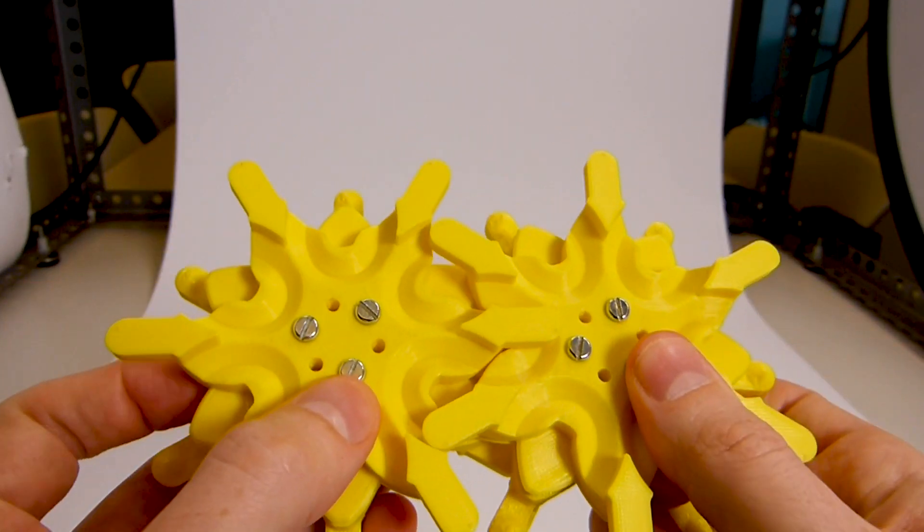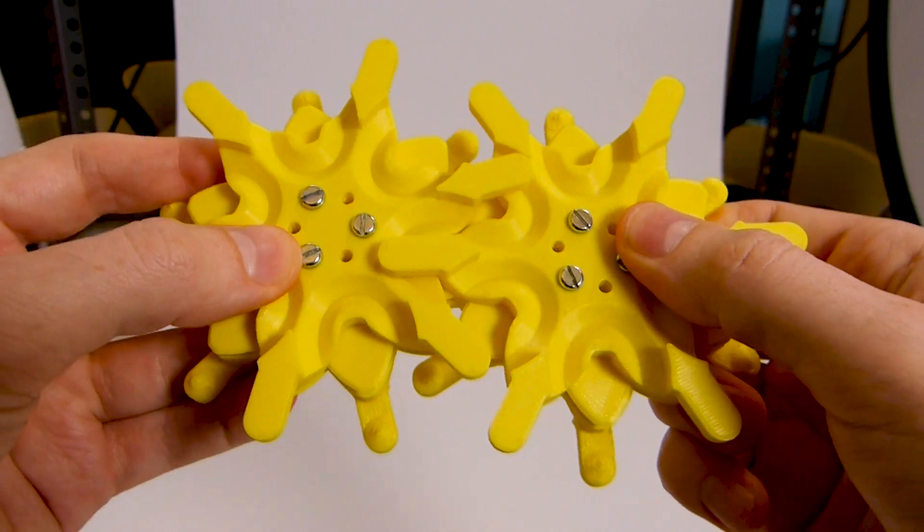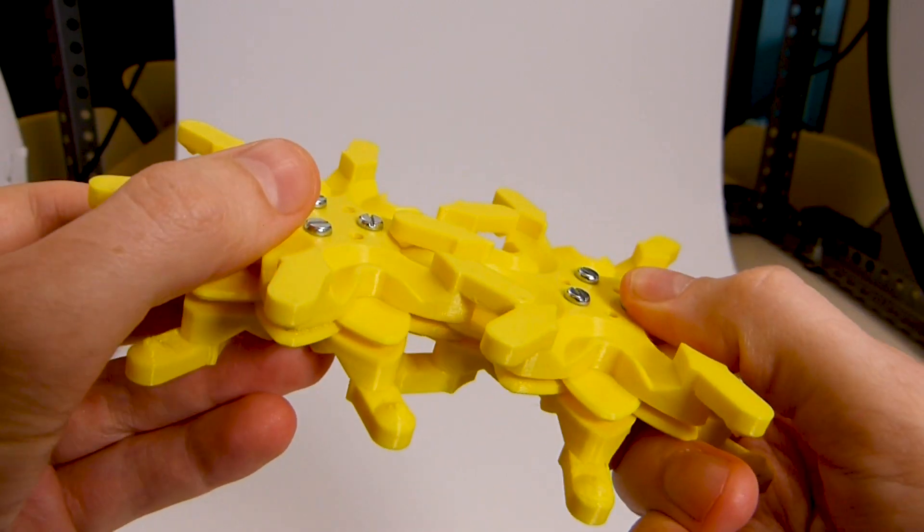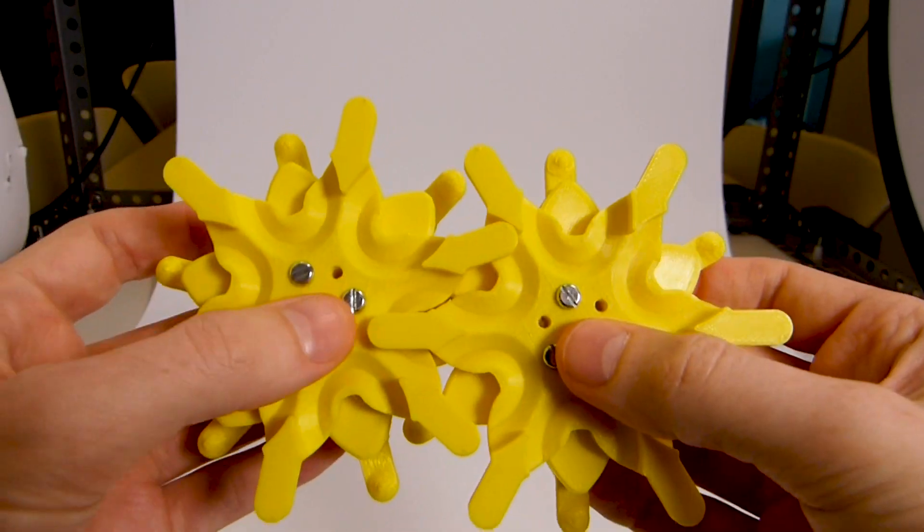The grooves are exactly the right shape so that as the gear rotates past, the cone goes along that groove and that's what grips from the top.